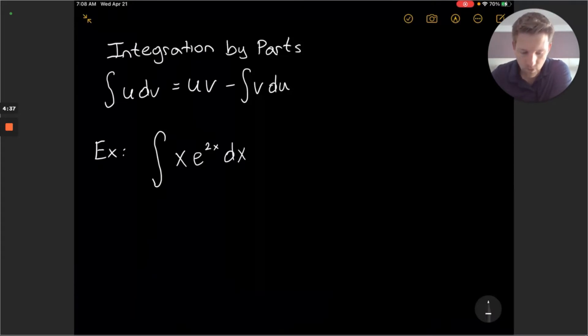The first thing we want to consider is finding a u and a dv in my current integral. Once I have that u and v function I'm going to want to take the derivative of the u function, call that du.